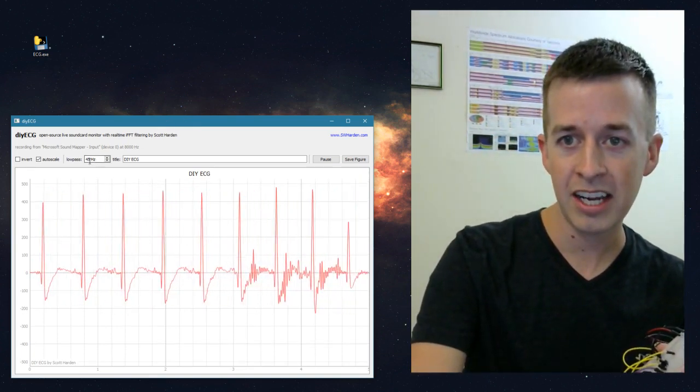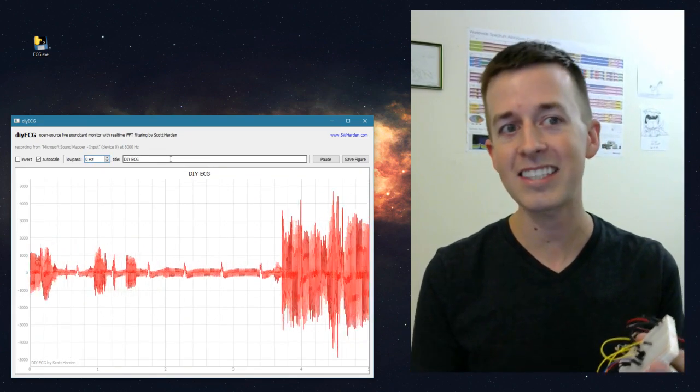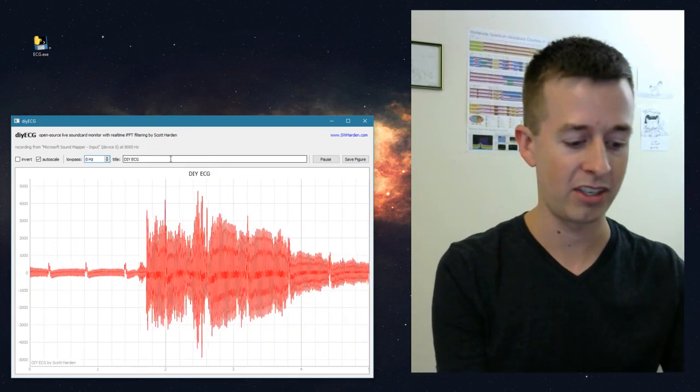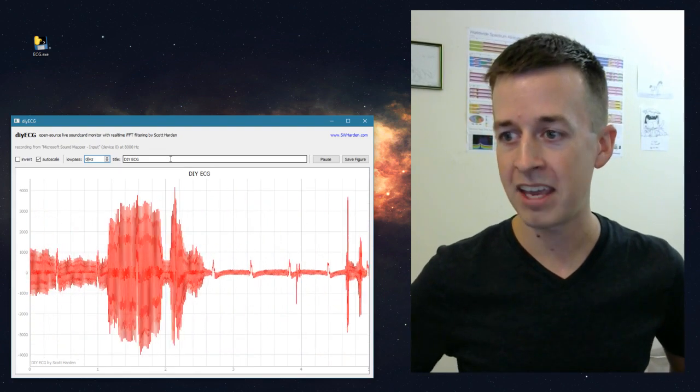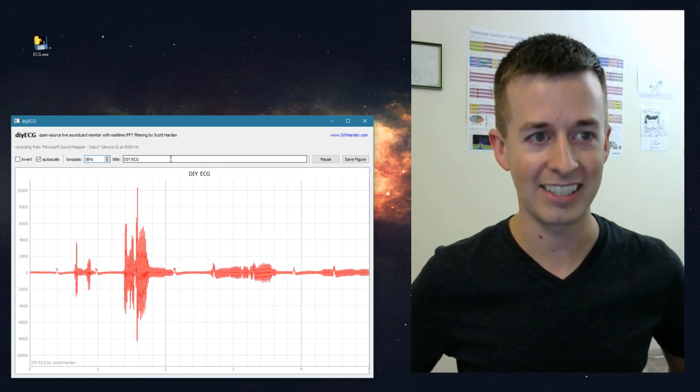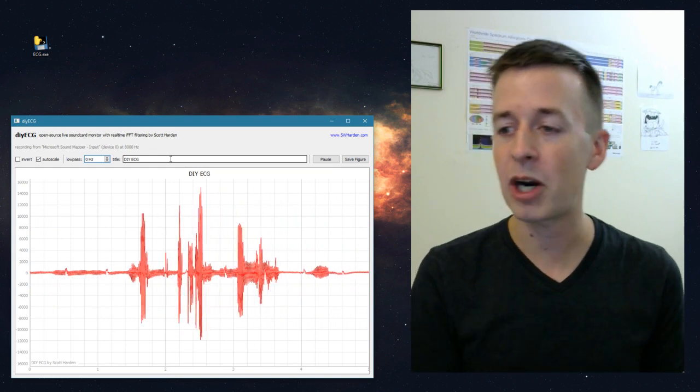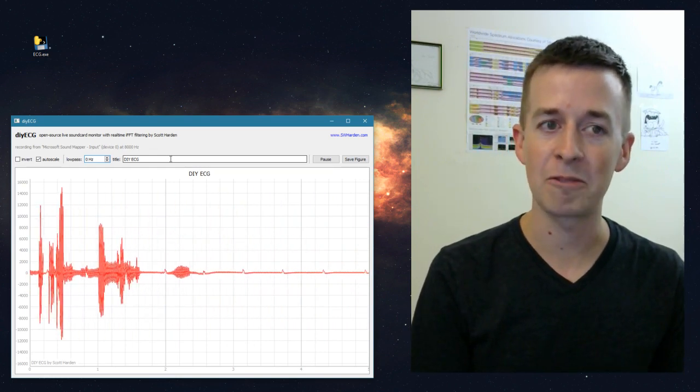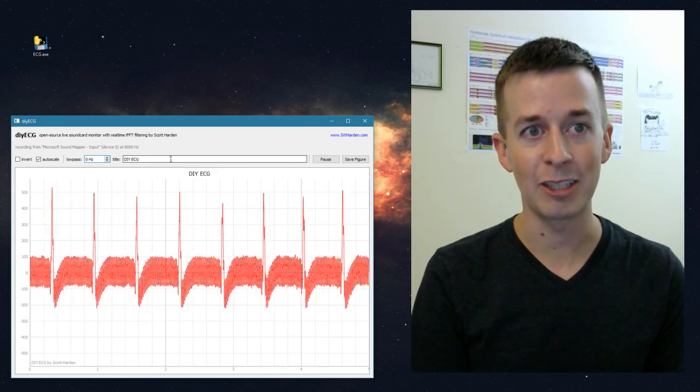So let's glance at the software, and if I adjust the software to low-pass filter at 0 hertz, we can see the actual data coming into the computer. I'll stop handling the breadboard so it starts to get a little bit cleaner. And if you look really closely, you can see my heartbeat in there. My heartbeat is sort of where it goes up and down a little bit. But my heartbeat is mixed in with a lot of noise, a lot of 60 hertz noise. And there are a couple ways that we could eliminate it.